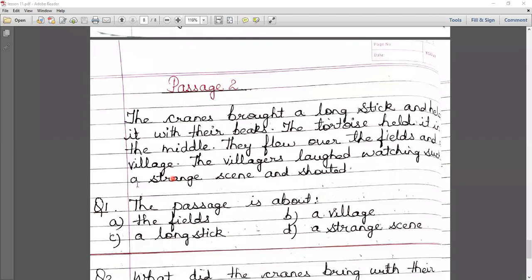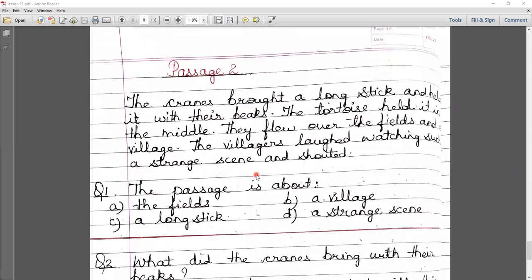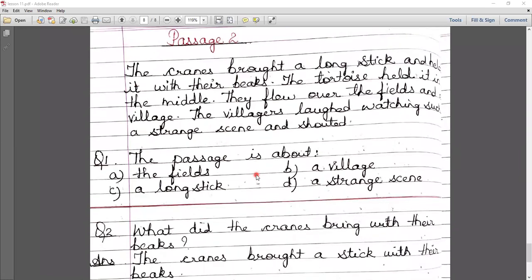So they saw this scene and the villagers were laughing and they said they saw such a strange scene and shouted. This passage is about the fields, a village, a long stick, and a strange scene. So what was it? A strange scene. The correct answer is a strange scene.